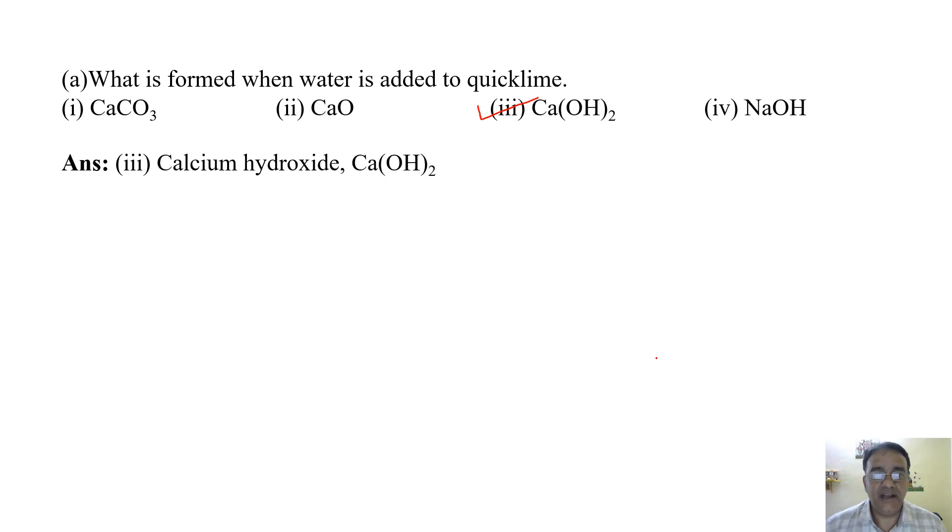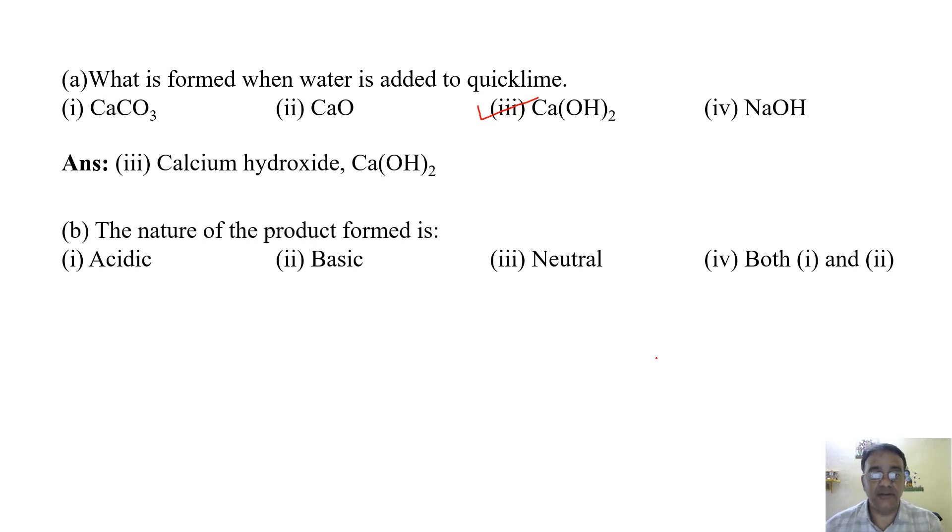And the nature of product formed is: first acidic, second basic, third neutral, and fourth one and first and second bit. So calcium hydroxide that is used as a base only, so this is basic in nature. So correct option is the second one.